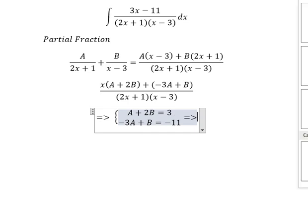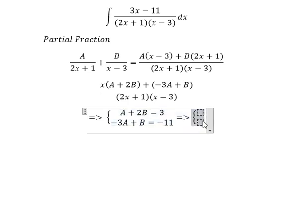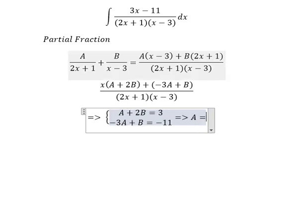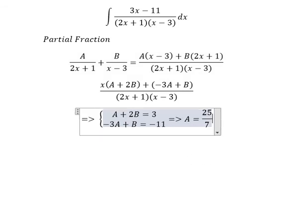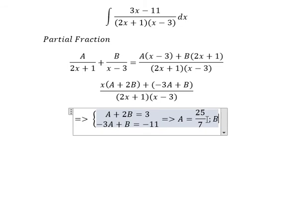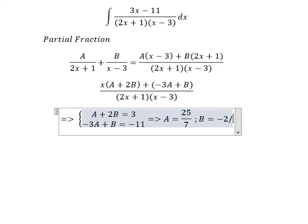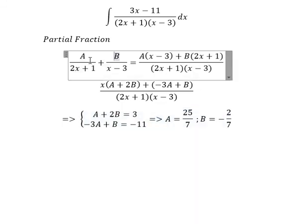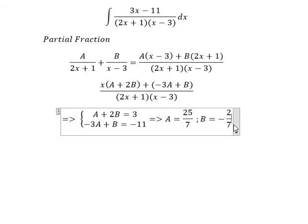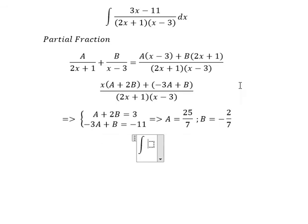So we can find the value of A and B. A we got about 25 over 7, and B we got about negative 2 over 7. Now we can put back the value of A and B.